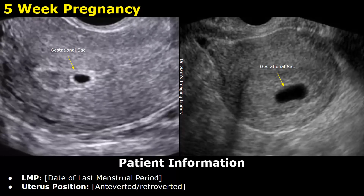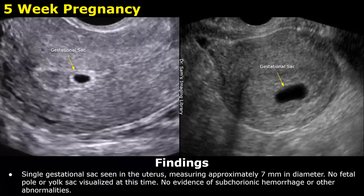Starting with a 5-week pregnancy. The report starts with patient information. We will write the LMP, that is the date of last menstrual period, and after that we can write the uterus position, whether it is anteverted or retroverted. We will only look at singleton pregnancies and are not including twin pregnancies in this video.